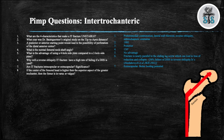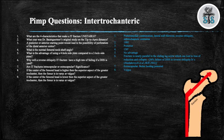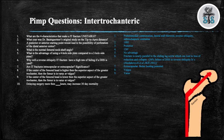Question 8: If the center of the femoral head is higher than the superior aspect of the greater trochanter, then the femur is in varus or valgus? Varus. Question 9: If the center of the femoral head is lower than the superior aspect of the greater trochanter, then the femur is in varus or valgus? Varus. Question 10: Delaying surgery more than how many hours may increase 30-day mortality? 48 hours.